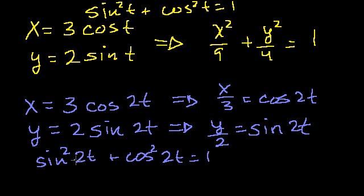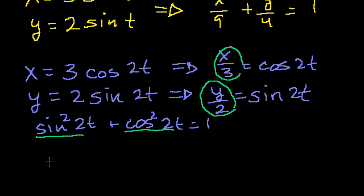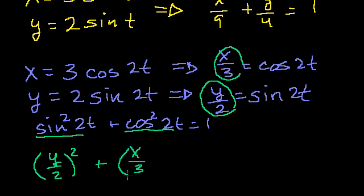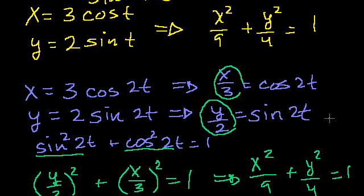In fact, sine squared of anything plus cosine squared of that same anything is equal to 1 — as long as both arguments are the same. So we can substitute x over 3 in for cosine of 2t and y over 2 in for sine of 2t. We get (y over 2) squared plus (x over 3) squared equals 1, which is exactly x squared over 9 plus y squared over 4 equals 1. Both sets of parametric equations have the exact same path.